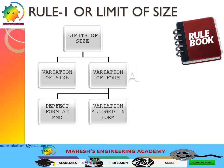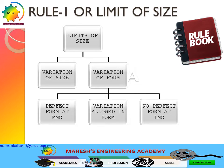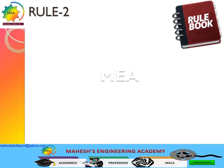The second case is when the actual size moves from MMC to LMC — variation is allowed, and the amount of variation allowed is equal to the difference between the actual size and the size tolerance. The third case is when the part is produced at LMC — when the part is produced at LMC, no perfect form is required.